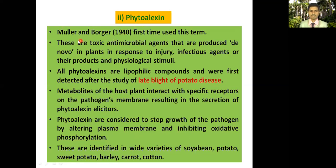Phytoalexins: scientists Müller and Borger in 1940 first used this term. Phytoalexins are produced at the node stage — the initial stage of the plant — in response to any kind of injury, infectious agents or their products, or physiological stimuli. All phytoalexins are lipophilic compounds and were first detected after study of late blight of potatoes.